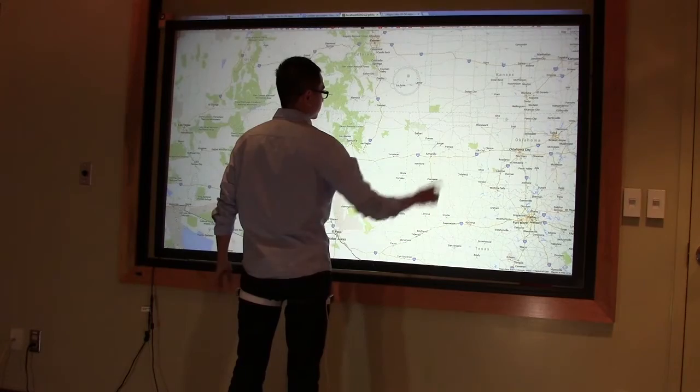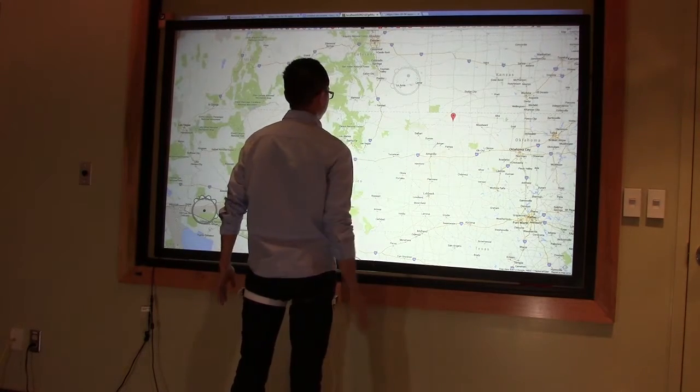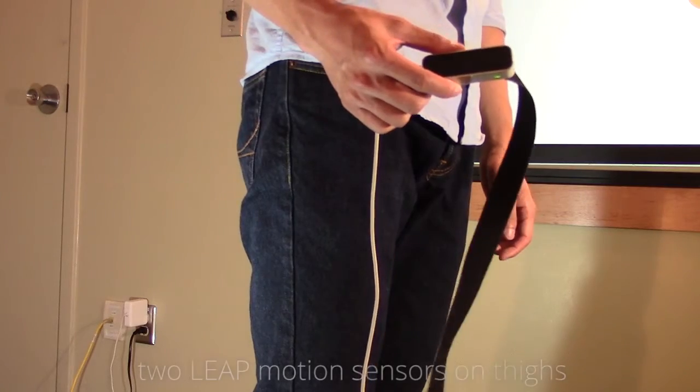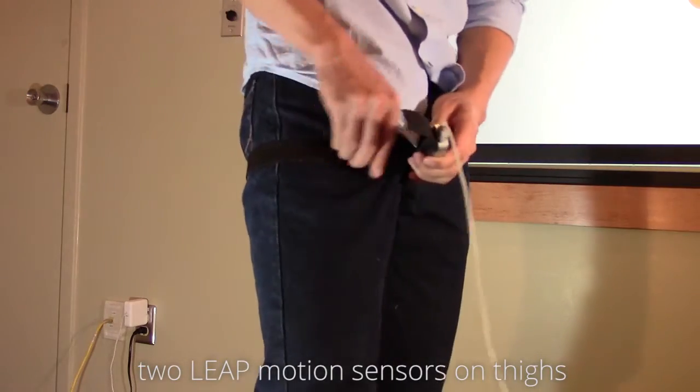Gunslinger and its interaction vocabulary are designed to work well with large display touch input. Hand and finger tracking uses Leap Motion depth cameras strapped to each thigh.